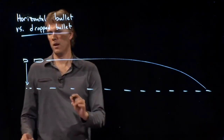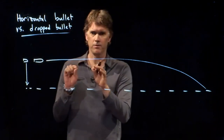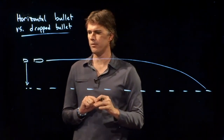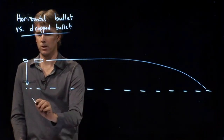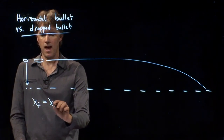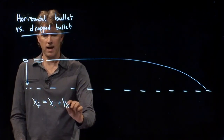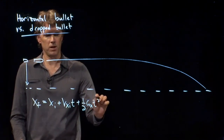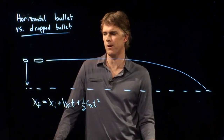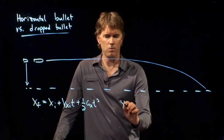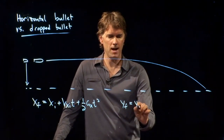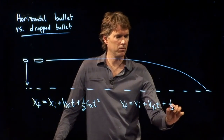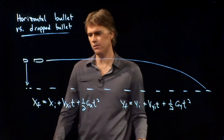Let's convince ourselves. These are both projectiles, right? As soon as they leave the gun or my hand, they are both projectiles, and so they are governed by the projectile equations, which are the kinematic equations. x-final equals x-initial plus v_xi times t plus one-half a_x t-squared. And y-final equals y-initial plus v_yi times t plus one-half a_y t-squared.